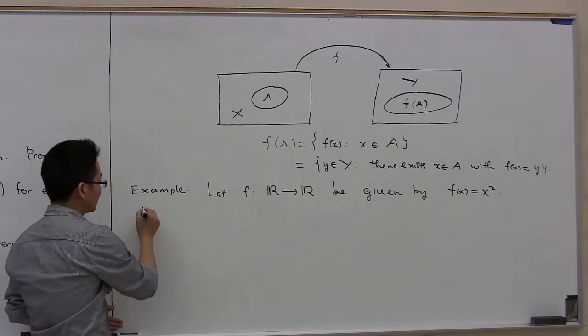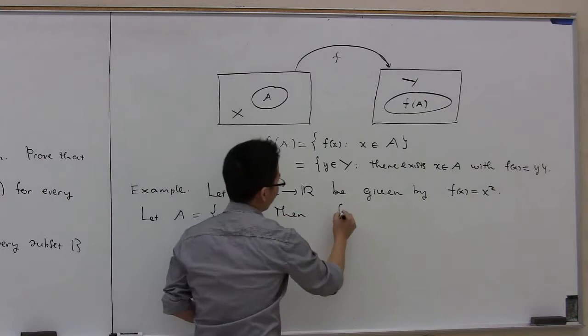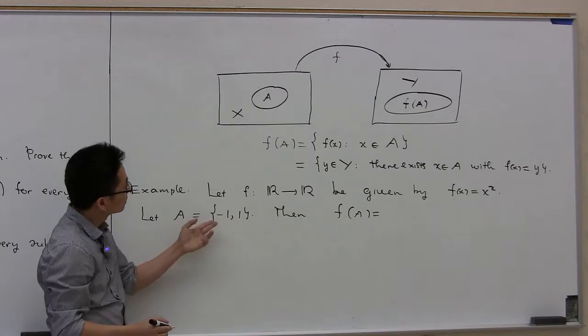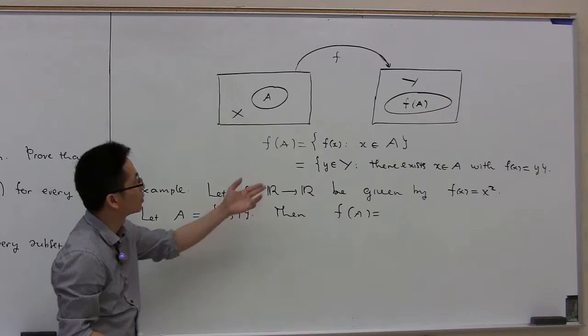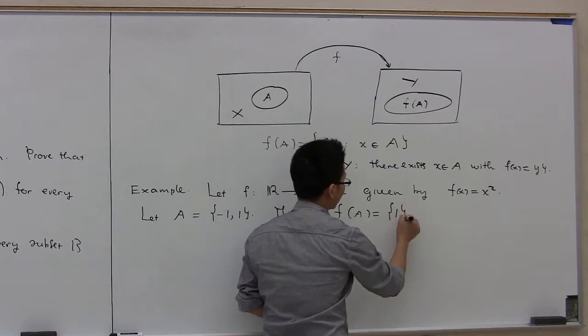Let A be the set {-1, 1}. Then f of A is computed as follows: you take any x in A, so x is either -1 or 1. You compute all possible outputs where the inputs are in A. f of -1 is 1, and f of 1 is 1 as well. So f of A in this situation is just the set {1}.